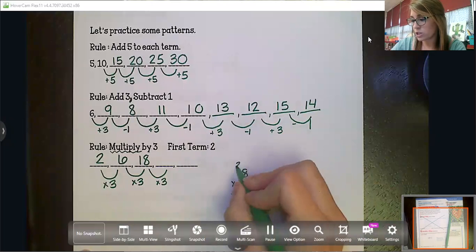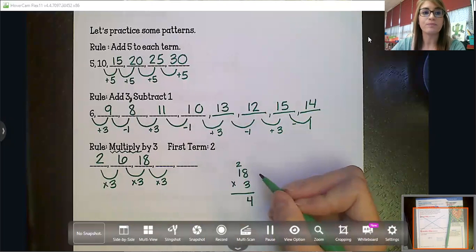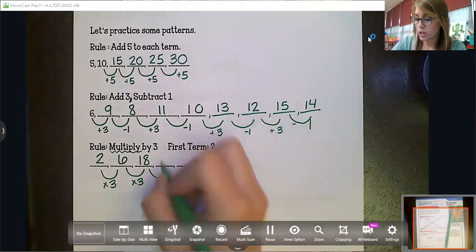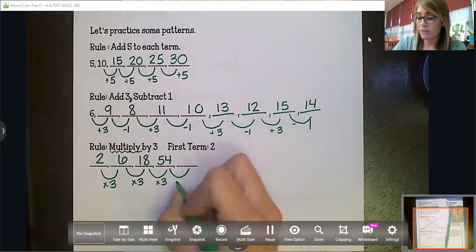Four, carry our two, three times one is three. Plus two is five. Great job. So we're going to put that 54 right here.